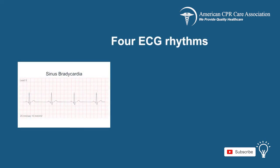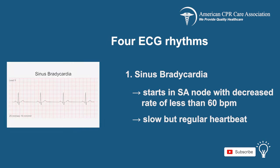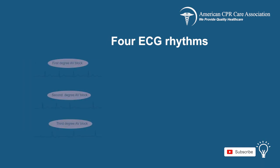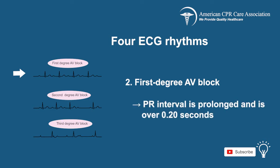There are four types of ECG rhythms associated with Bradycardia. The first is sinus Bradycardia, which starts in the SA node with a decreased rate of fewer than 60 beats per minute. It is a slow but regular heartbeat. The second type of ECG rhythm is first degree AV block, where the PR interval is prolonged and is more than 0.20 seconds.